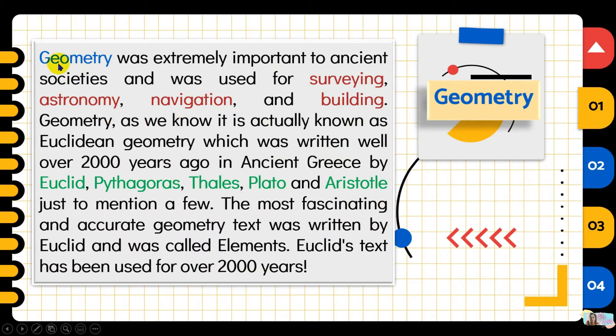So where did geometry start? Geometry was extremely important to ancient societies and was used for surveying, astronomy, navigation and building. Geometry as we know it is actually known as Euclidean geometry which was written well over 2,000 years ago in ancient Greece.